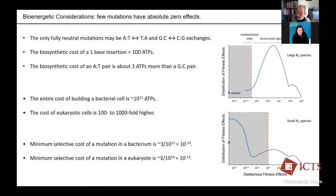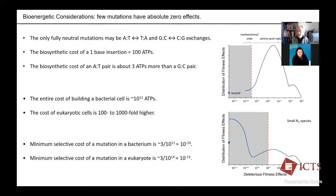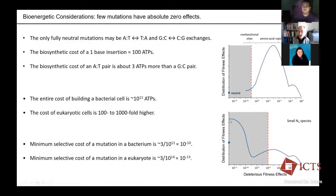Most mutations are deleterious — but what about beneficial mutations? That's the subject of most of today's lecture. We might think their distribution is a mirror image with most beneficial mutations having very small effects. But because beneficials are tiny islands in the sea of deleterious mutations, it's very difficult to say what their distribution is in any quantitative way. That remains the big unanswered question in evolutionary genetics.